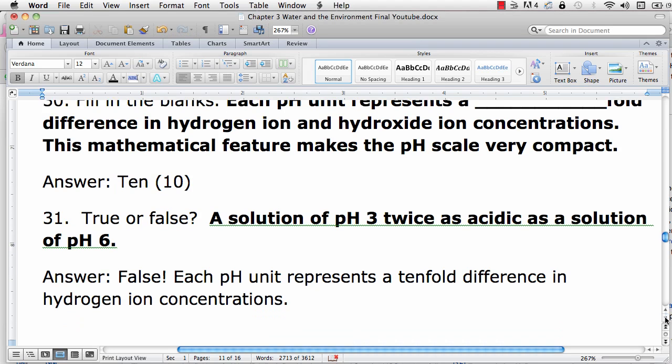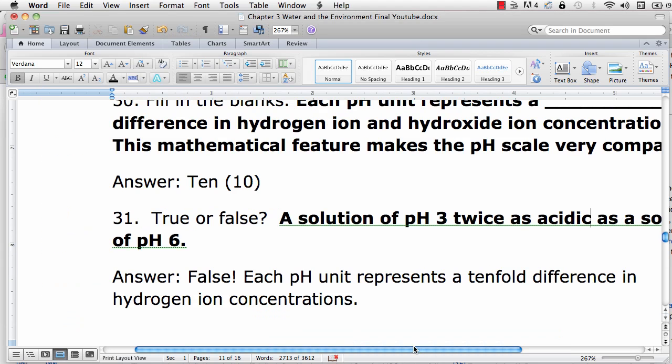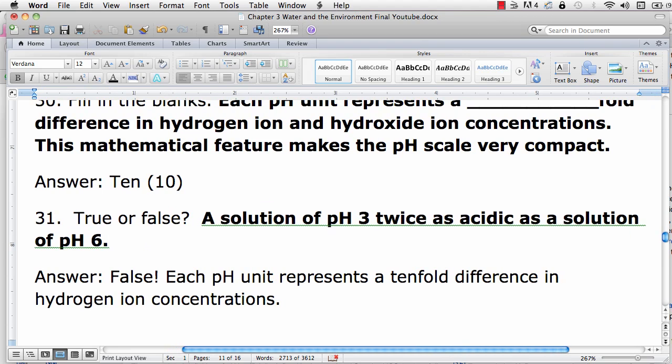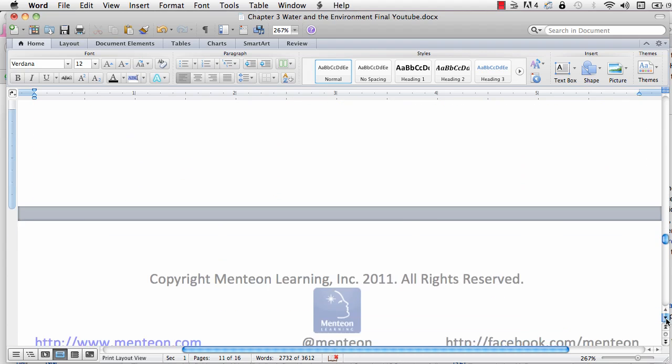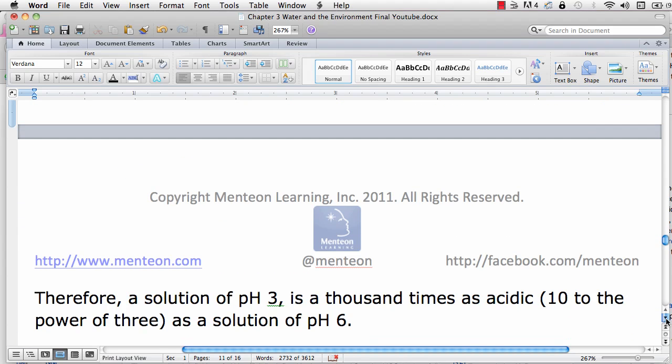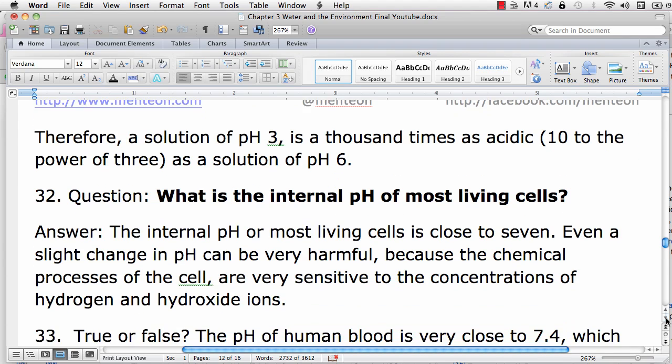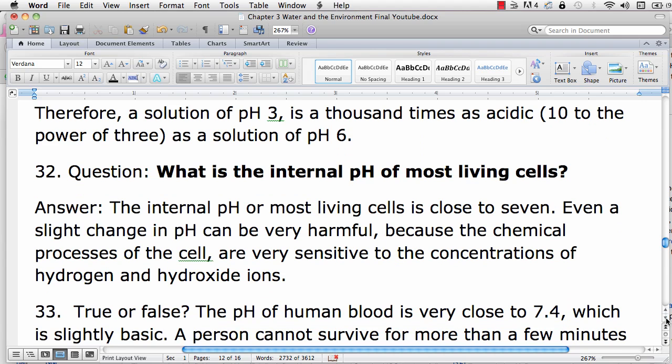Now we can see that a solution of pH 3 is not just twice as acidic as a solution of pH 6. Each pH unit represents a ten times difference in hydrogen ion concentrations. So a solution of pH 3 is a thousand times as acidic, 10 to the power of 3 times as acidic as a solution of pH 6.